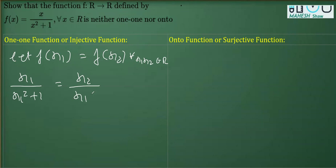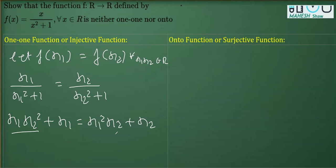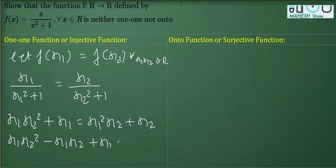Replacing x with x₂ gives f(x₂) = x₂/(x₂²+1). Now doing cross multiplication, we get x₁(x₂²+1) = x₂(x₁²+1), which gives x₁x₂² + x₁ = x₁²x₂ + x₂. Rearranging: x₁x₂² - x₁²x₂ + x₁ - x₂ = 0.